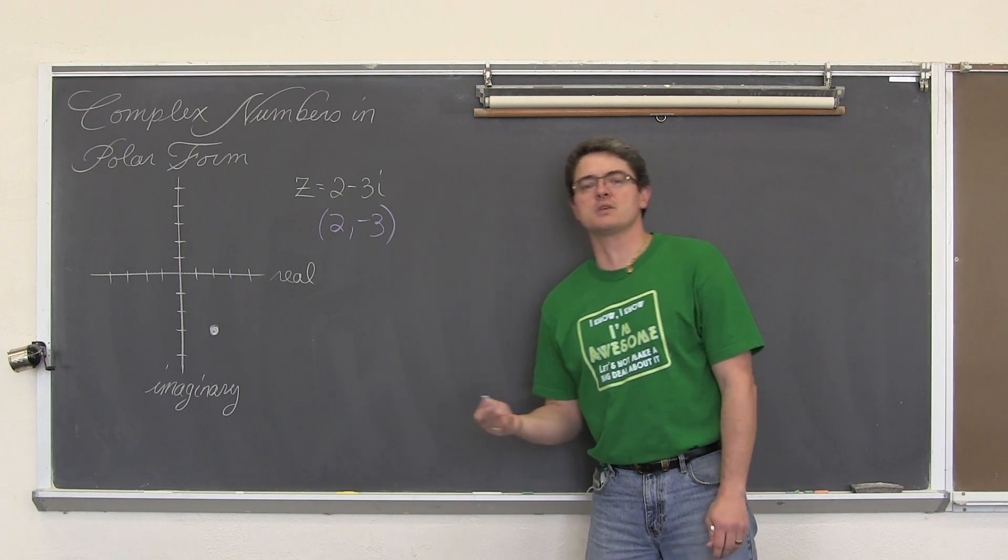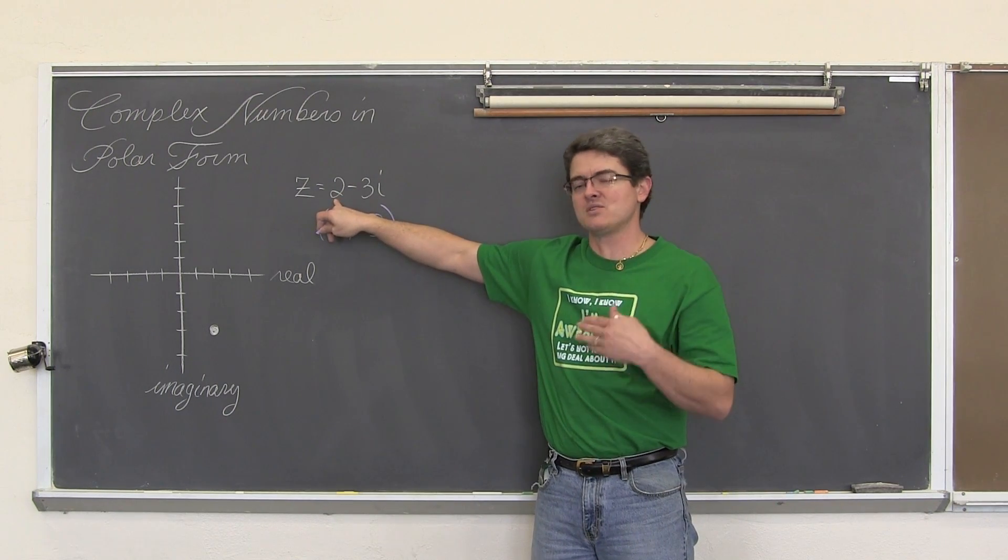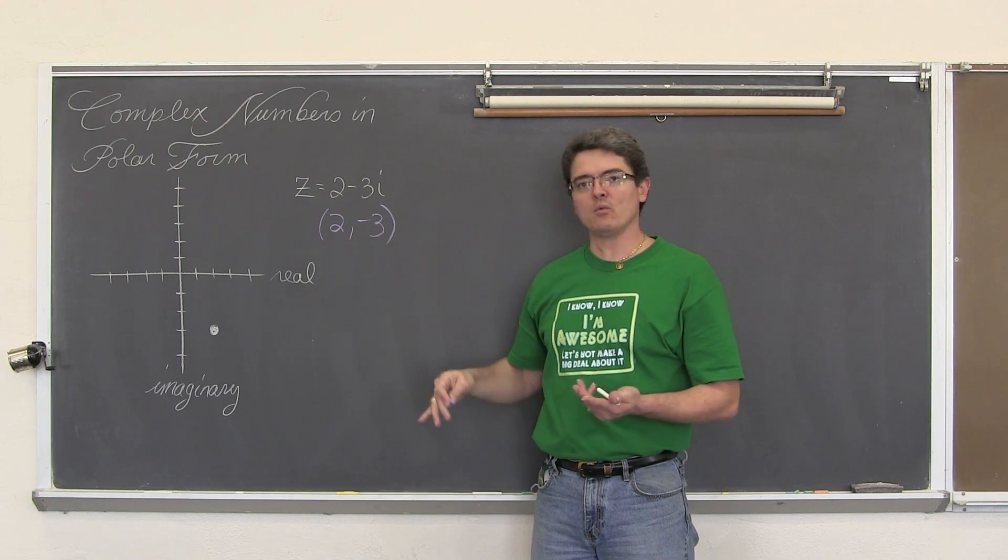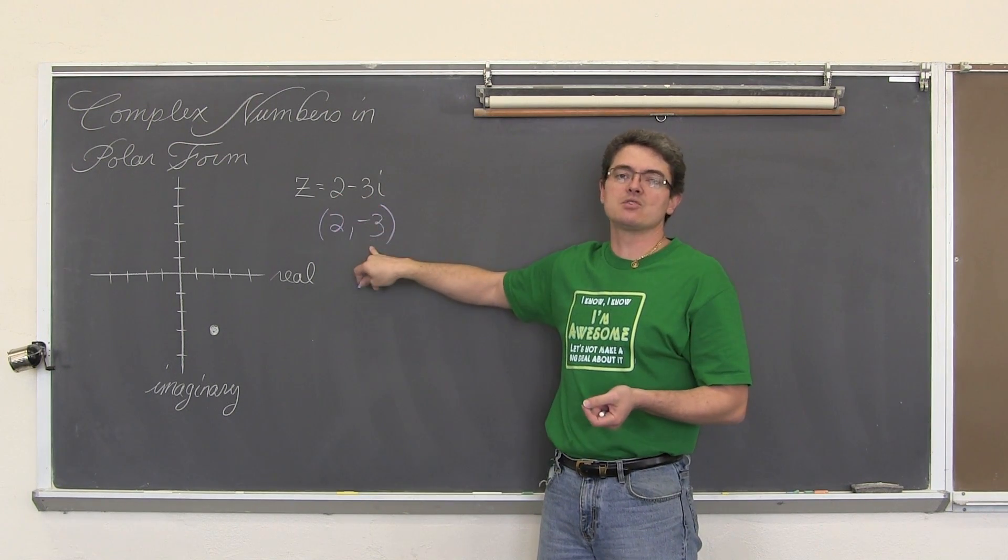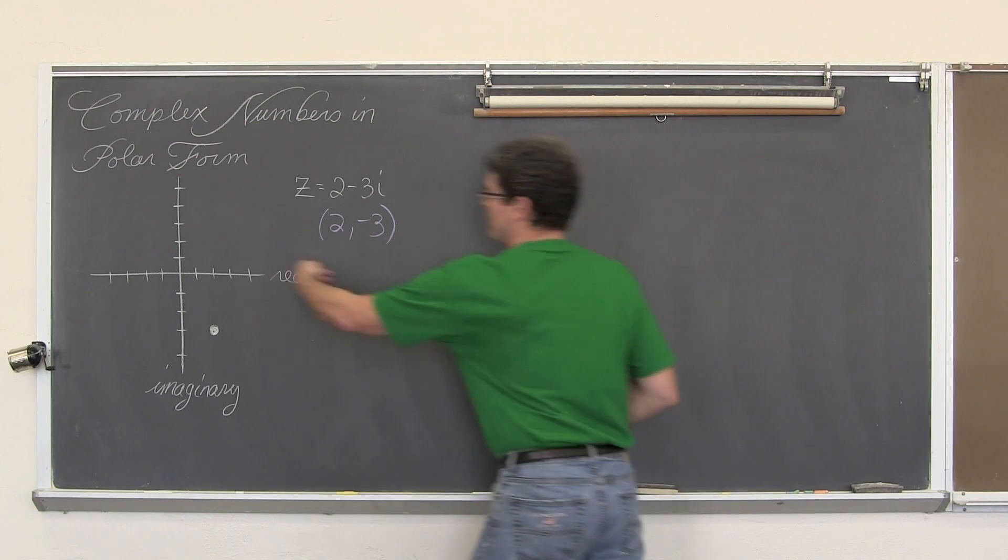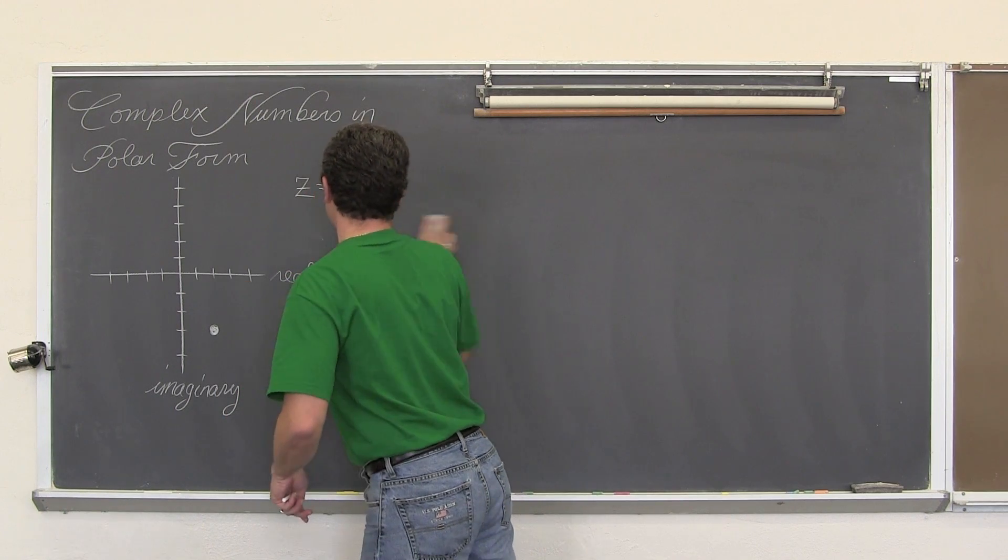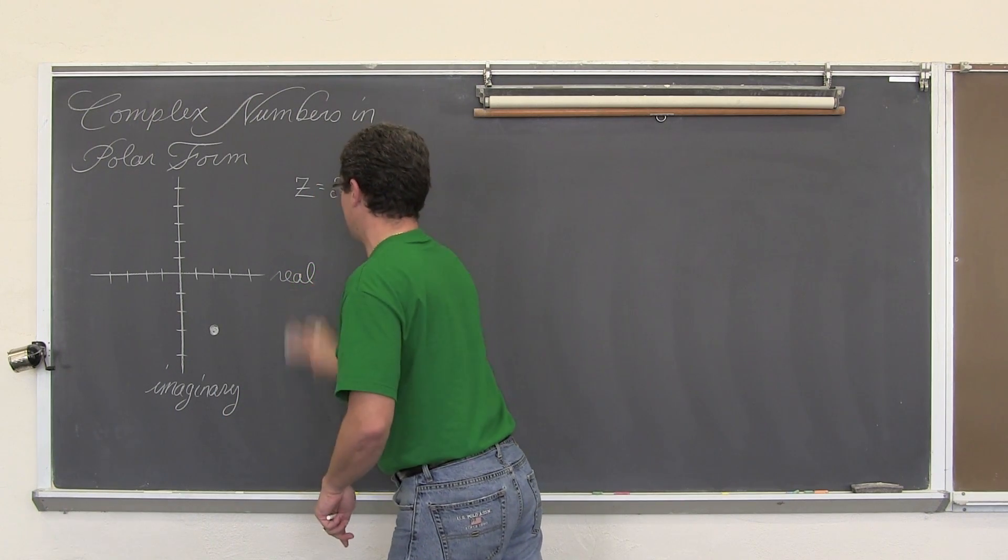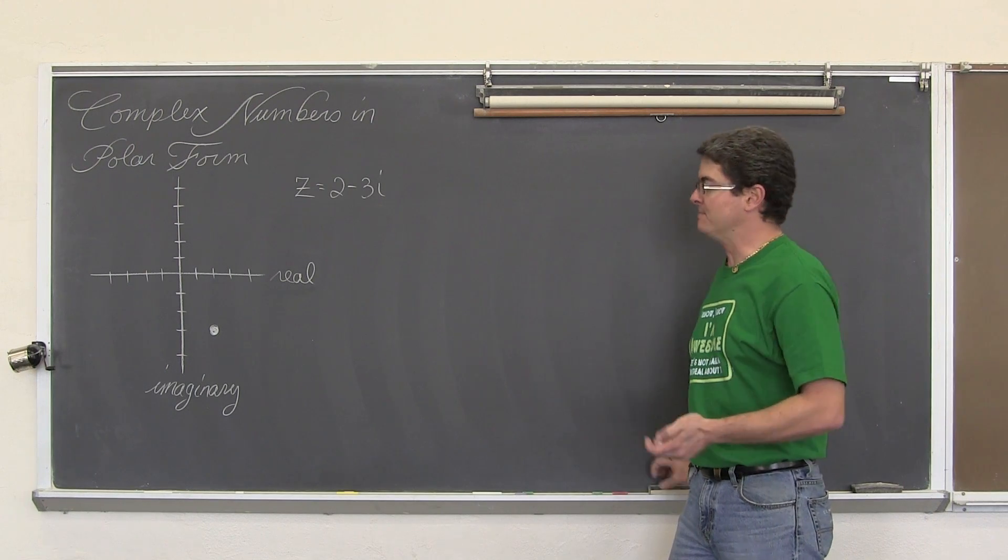When you are looking at complex numbers, the real portion of the complex number acts as your x coordinate would, and the imaginary coefficient is going to act as your y coordinate. The real value is horizontal and the imaginary coefficient is your vertical component, which we have known up until now as y, but it is b.